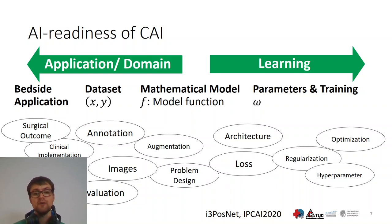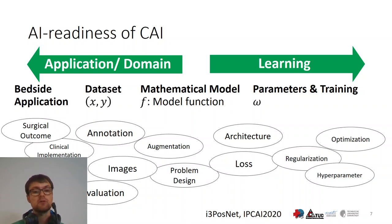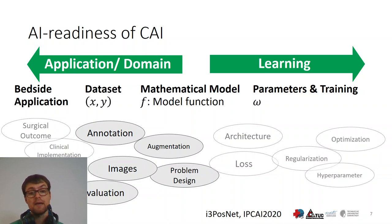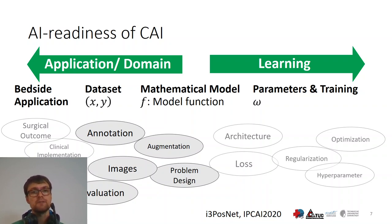Going back to AI and the CAI problem and its AI readiness, we want to focus on three aspects in this talk. First, images and annotation. Second, augmentation. And third, the problem design. We'll skip the evaluation here because we already discussed this in the short presentation. This is the iterative scheme.